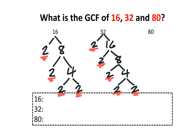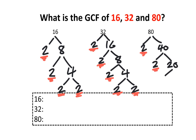I'm going to do the same thing with 80. We're going to break down 80 into two numbers. Think of two numbers that multiply to give you 80 — I can think of 2 and 40. 2 is a prime number, so we stop there. 40 can be broken down into 2 and 20. 2 is prime, so we stop. 20 can be further broken down into 2 and 10. 2 is prime, so we stop. 10 can be broken down into 2 and 5. Both 2 and 5 are prime numbers, so we're going to stop there as well.